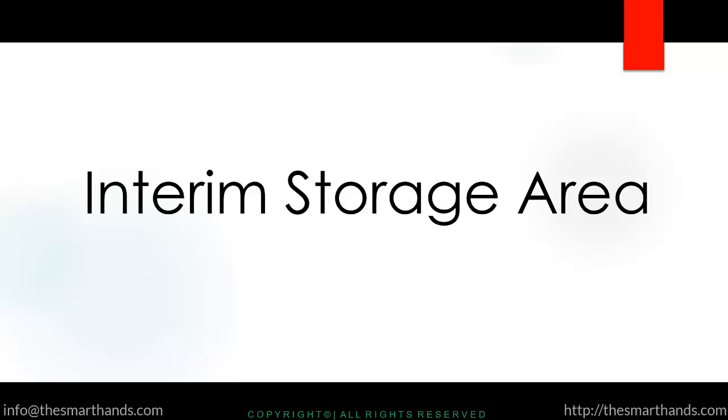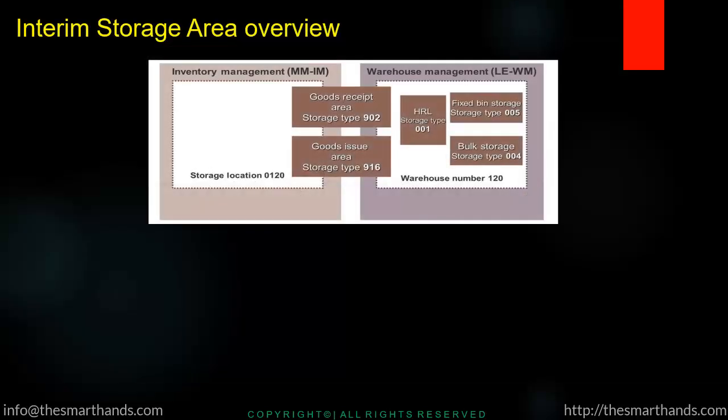Before we move ahead, I want to give an overview of the interim storage area — what it means and what the concept is. In real time, when you create a goods receipt transaction in MM, as soon as you complete it the system will start the WM activities. But it will not immediately put the goods into the storage section or bin area. First they will be stored in a temporary area called the interim storage area, and from there they will be moved to their final destination.